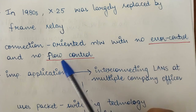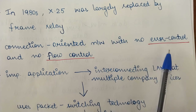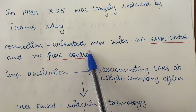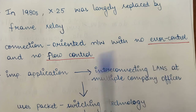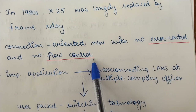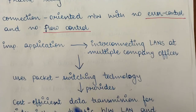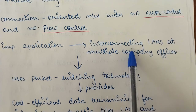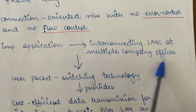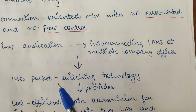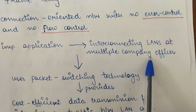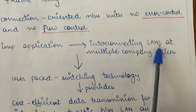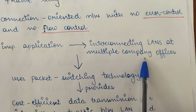Frame Relay is a connection-oriented network but without any error control or flow control. Its important application was interconnecting LANs at multiple company offices. If a company has various offices with different LANs, Frame Relay helped in connecting those LANs at the different offices.